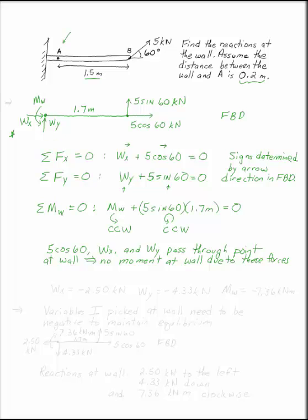Now I can solve each of these equations, and I have wx equals negative 2.5 kN, wy is equal to negative 4.33 kN, and mw is equal to minus 7.36 kN meters.